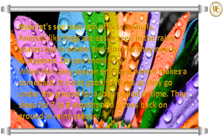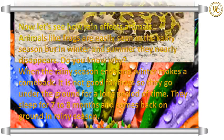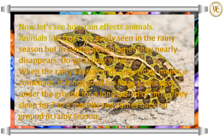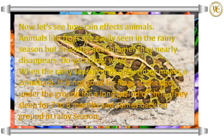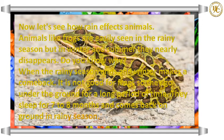Let's see how rain affects animals. Animals like frogs are easily seen in the rainy season, but in winter and summer they nearly disappear. When the rainy season ends and winter makes a comeback, it is not good for frogs. So they go underground for a long period of time — they sleep for seven to eight months and come back above ground in the rainy season.